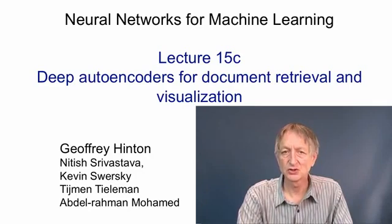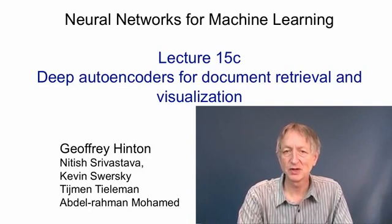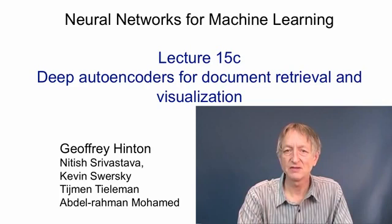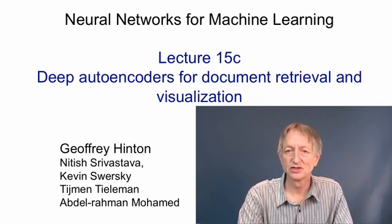In this video, I'm going to talk about applying deep autoencoders to document retrieval. There was a method developed some time ago called latent semantic analysis that amounts to applying principal components analysis to vectors of word counts extracted from documents. The codes produced by latent semantic analysis can then be used for judging similarity between documents, so they can be used for document retrieval. Obviously, if deep autoencoders work much better than PCA, we would expect to be able to extract much better codes using a deep autoencoder than using latent semantic analysis, and Russ Salakhutdinov and I showed that that was indeed the case.